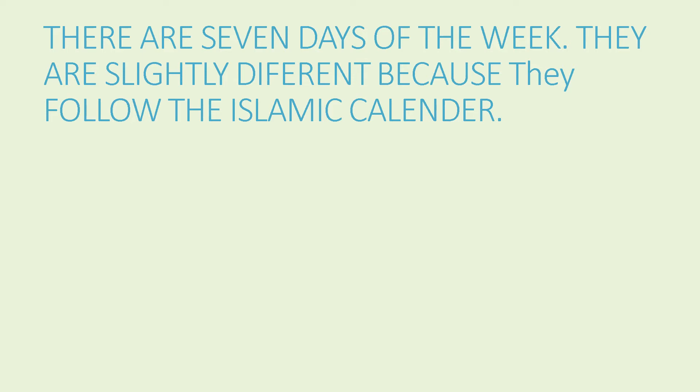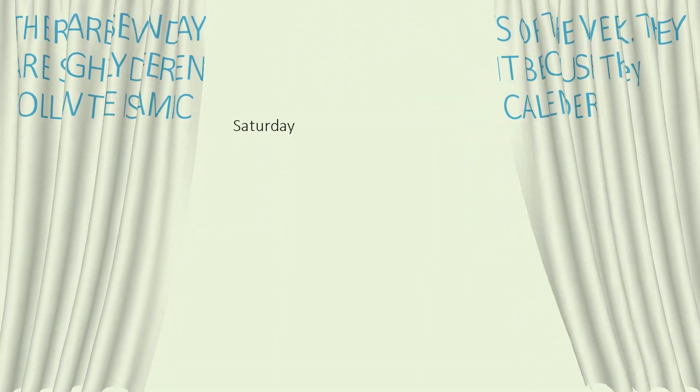Siku za wiki, or days of the week — these are just like in English; there are also seven days. However, it differs from the Gregorian calendar in the sense that the Kiswahili system follows the Islamic calendar. The Islamic calendar starts from Saturday, which is Jumamosi. The word 'juma' means a week, so Jumamosi is Saturday, and Jumapili is Sunday.